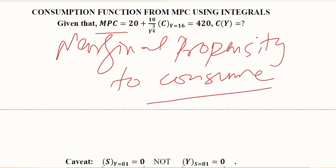This is the given marginal propensity to consume function. We are also given a condition where the consumption level is 420 units when income is 16 units. The income would be in some higher units because if 420 is the consumption, it should be less than the 16 units of income. So 420 should have smaller units compared to the income units. This is the given information.